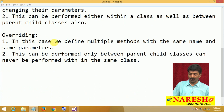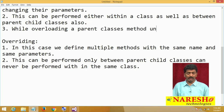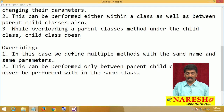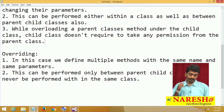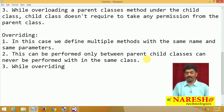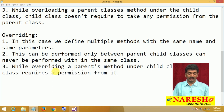The next difference: while overloading a parent class's method under the child class, the child class does not require permission from the parent class. But while overriding a parent's method under the child class, the child class requires a permission from its parent.